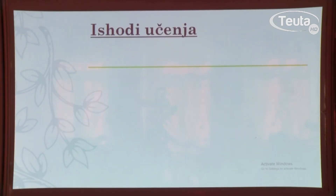Prisjetit ćemo se da smo na prethodnom času osvježili znanja o vrstama riječi u crnogorskom jeziku, o njihovoj podjeli na promjenljive i nepromjenljive riječi, kao i o tome da se u grupi promjenljivih vrsta riječi grupišu dvije grupe: deklinacione riječi – imenice, zamjenice, pridjevi i neki brojevi, jer se mijenjaju po padežima, i konjugacione riječi, odnosno glagoli, koji se mijenjaju po licima, vremenima i načinima.